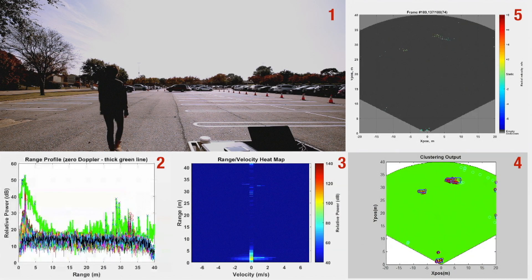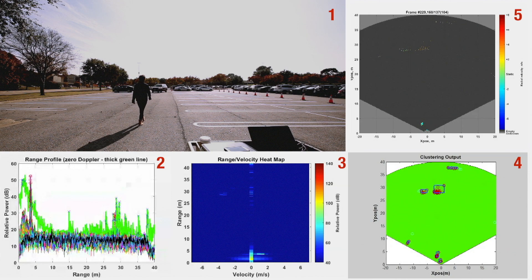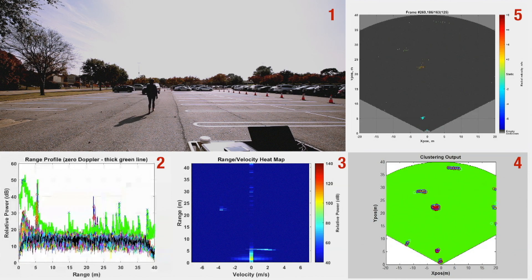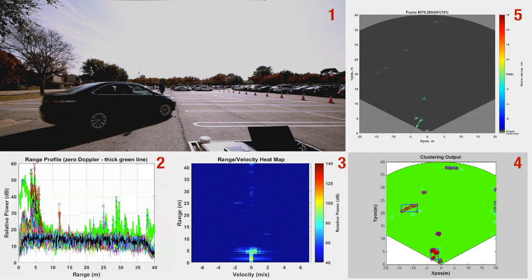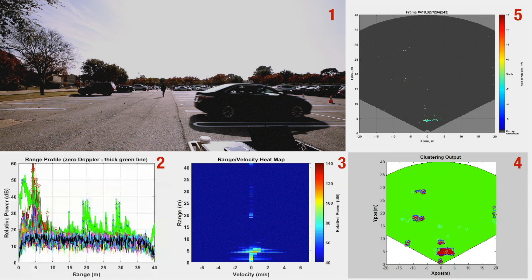Radar can also detect pedestrians as soon as she enters the scene. One important observation is that the micro Doppler information is also revealed in the range Doppler heat map, which is critical for pedestrian recognition.